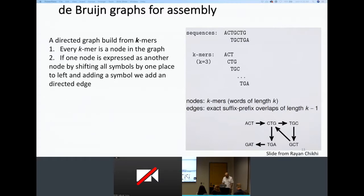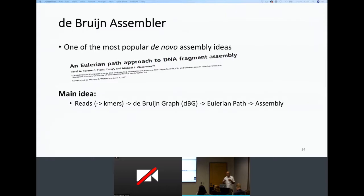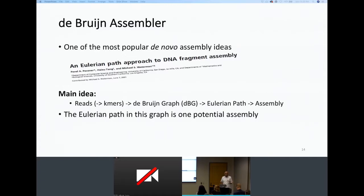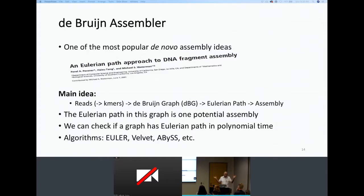This de Bruijn graph construction is the basis for all the methods we'll build upon. The de Bruijn assembler works as follows: you get the reads, break them into k-mers, build the de Bruijn graph, and then find an Eulerian path in this graph — that is your assembly. The Eulerian path can be checked and generated in polynomial time, which makes it computationally tractable. There are many assemblers built on this idea — 20, 30, or even more.